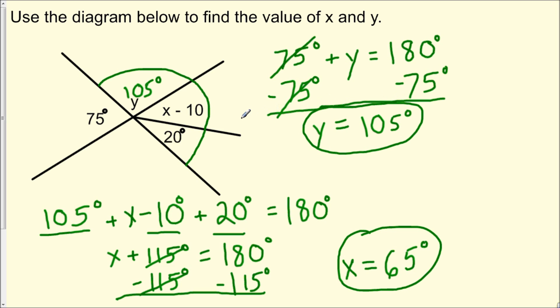So now if we plug these numbers in, we have 65 degrees minus 10 degrees is 55 degrees. So the measure of this angle here is 55 degrees, and the measure of this angle is 20 degrees. And if we add all of this together, 105 degrees plus 55 degrees is 160 degrees, plus 20 degrees is 180 degrees. So these values do check out.